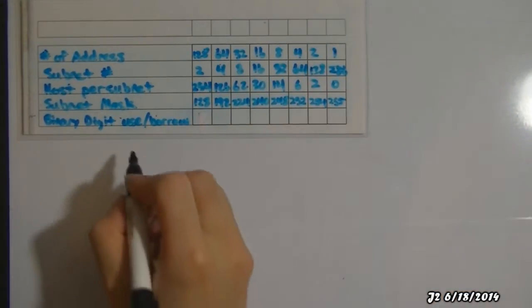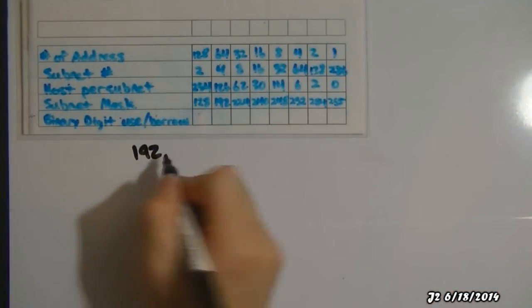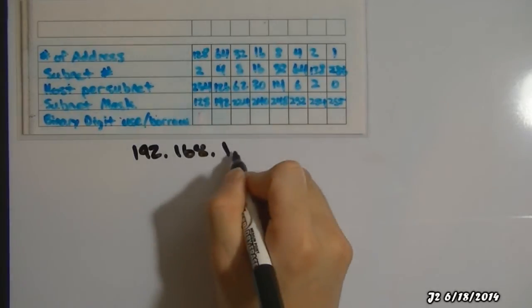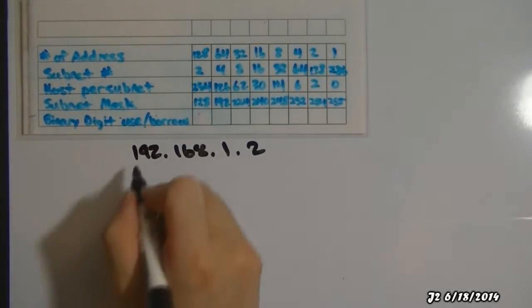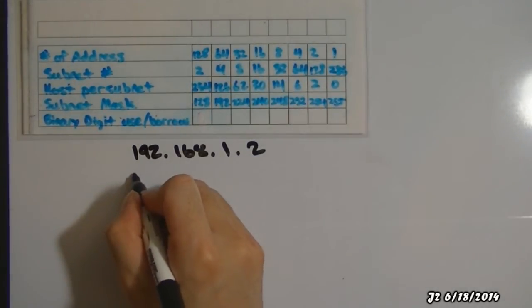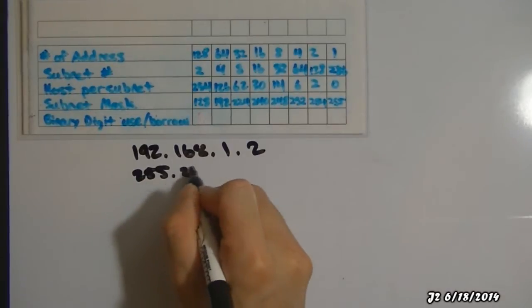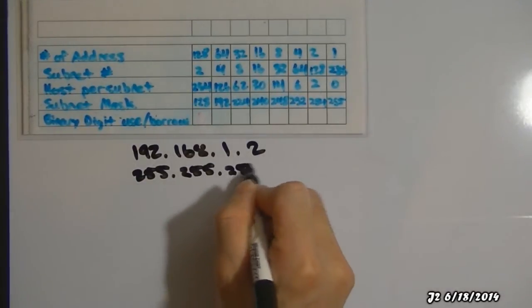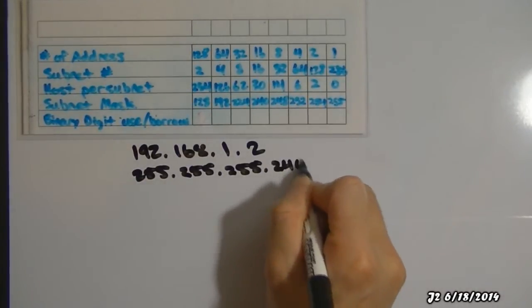Okay, so I'm going to be using the IP address 192.168.1.2 and the subnet mask 255.255.255.240.